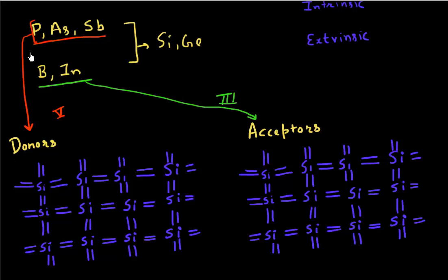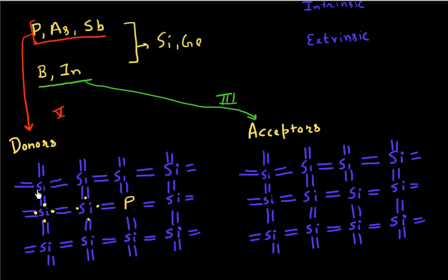Let me take one of my silicon atoms and replace it with a phosphorus atom. If I look at one of these silicon atoms, it has four electrons per atom in its outermost valence shell, and they are participating with these other four electrons from the neighboring silicon atoms. All of these four electrons are normally participating in these bonds.